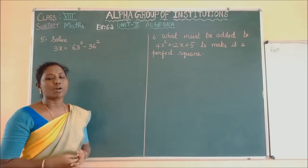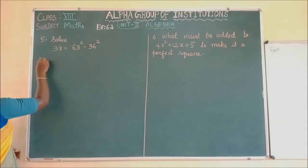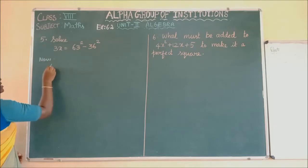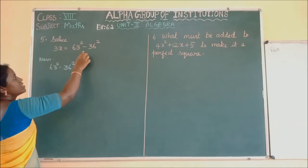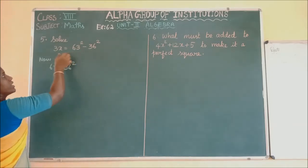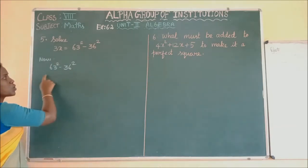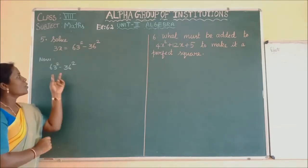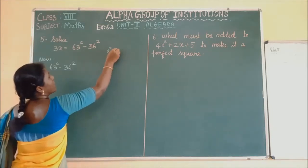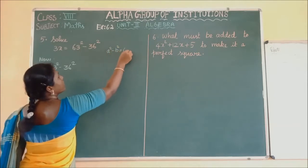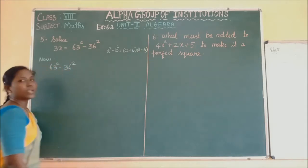To find the value of X, I am first taking 63 square minus 36 square, because 3X equals 63 square minus 36 square. If I solve the right-hand side, I will identify the value of X. Now 63 square minus 36 square — this is in the form of A square minus B square. The formula is A plus B into A minus B. So we have 63 minus 36 into 63 plus 36.